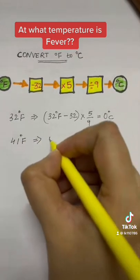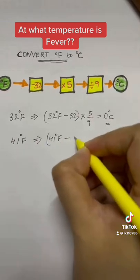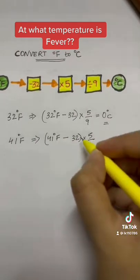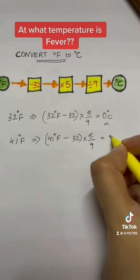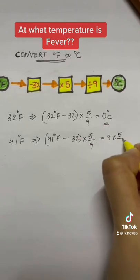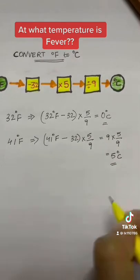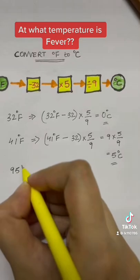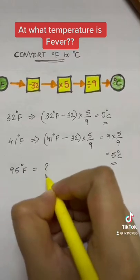For 41 degrees Fahrenheit: 41 minus 32, multiplied by 5 over 9, gives you 5 degrees Celsius. Now let's find out for 95 degrees Fahrenheit.